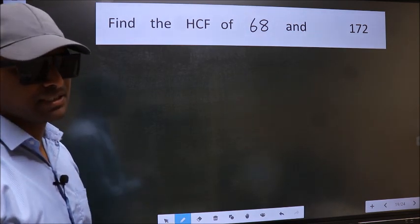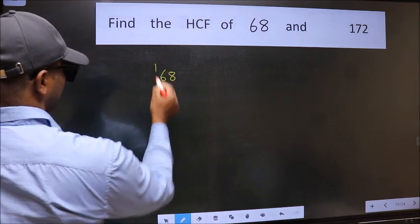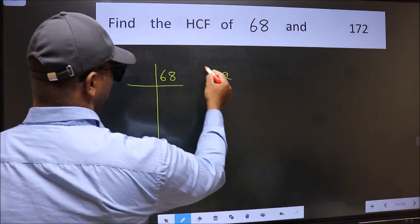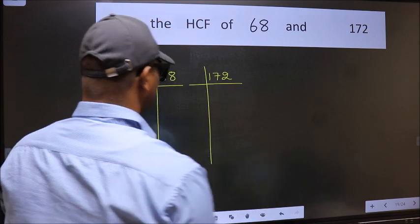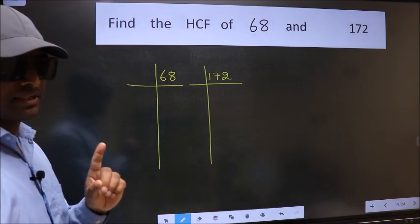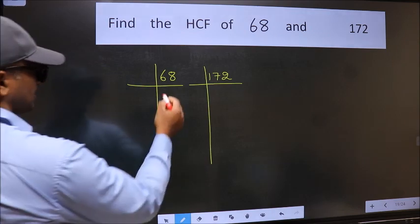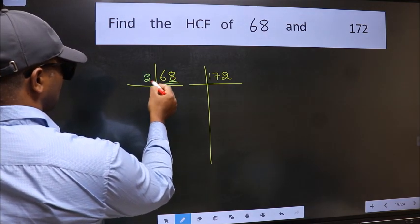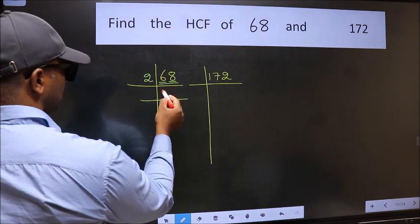What I mean is here: 68 and 172. This is your step 1. Next, in this number, last digit 8 is even, so take 2. First number 6, when do we get 6 in 2 table? 2 times 3 is 6.